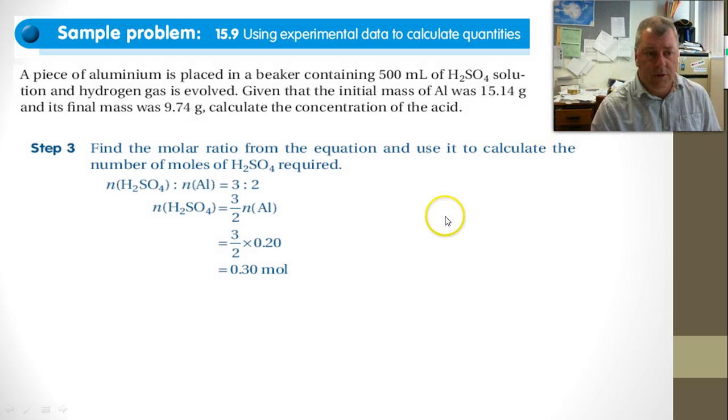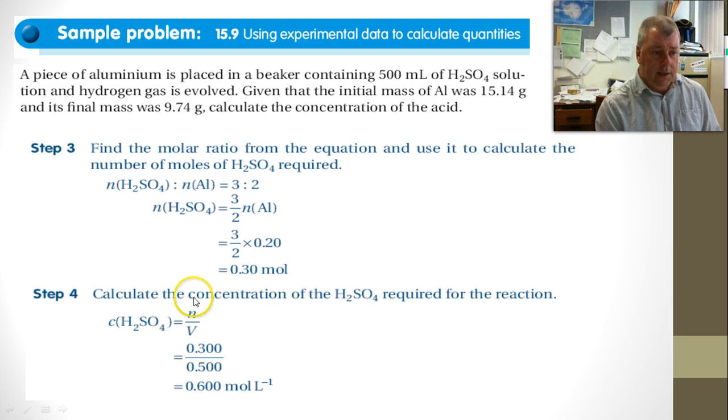Now we've used the molar ratio. We worked out how many moles we need of it, and step 4 is now to work out the concentration of the acid. And we're given the amount of acid, and we rearrange C equals n over V. We've got the n, we've got the V, and therefore the concentration is 0.6 mole. That's how you do that one.